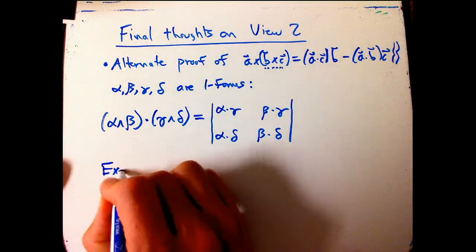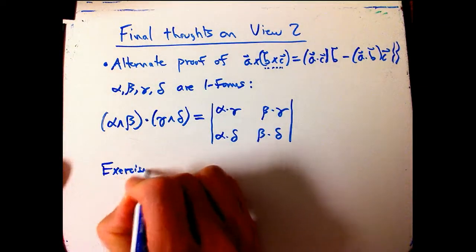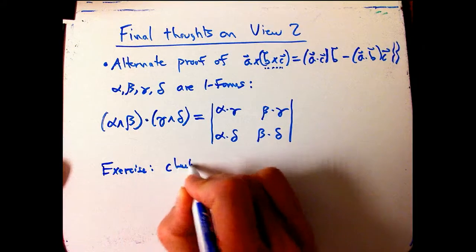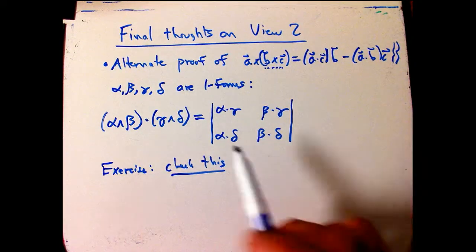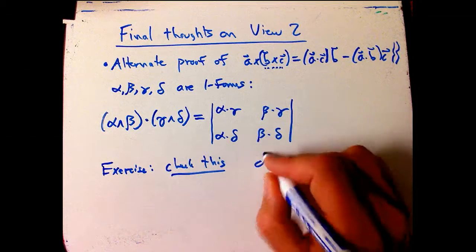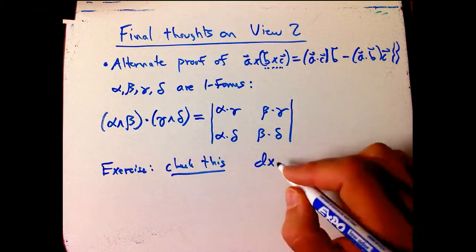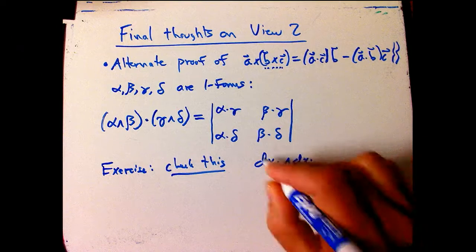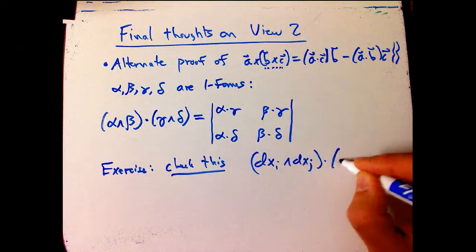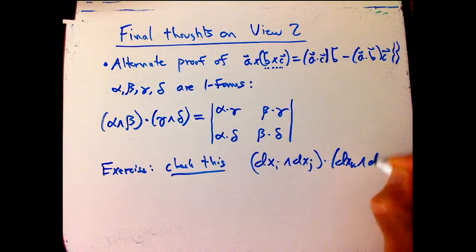So I'll just leave it as an exercise, basically, to check this. And you can just check it in a basis, basically. Just, you know, check DX, for example, DXi wedge DXj dotted with DXk wedge DXl.